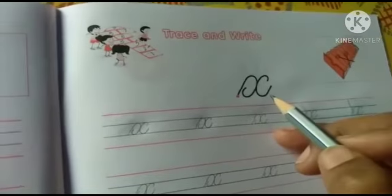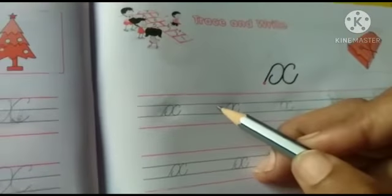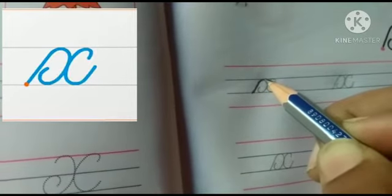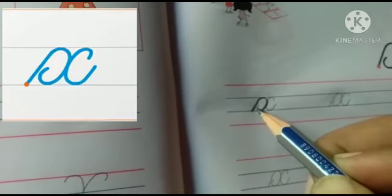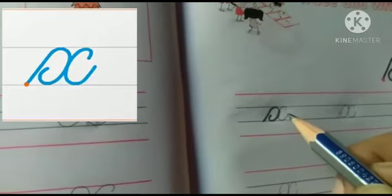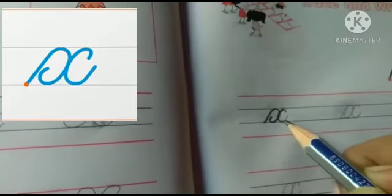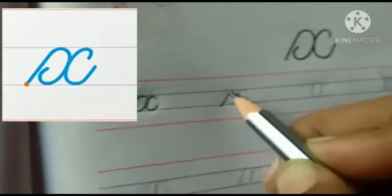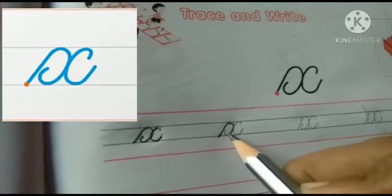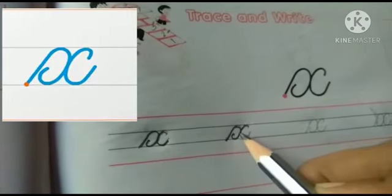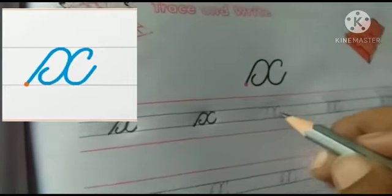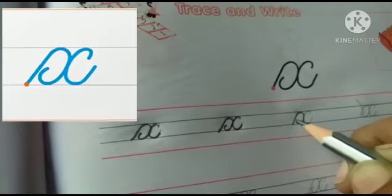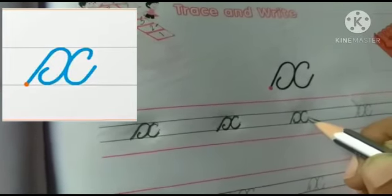Now the next letter is small X. We write it in the two middle lines — the blue lines. Put your pencil point on the third line. Go up with a slant line, make a small right curve within the two lines, turn inside a little bit, and again make a left curve. This is X. Put your pencil point on the third line, go with a slant line, make a right curve, turn inside, again make a left curve. This is X.